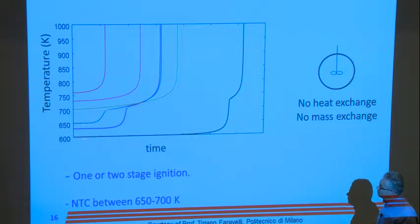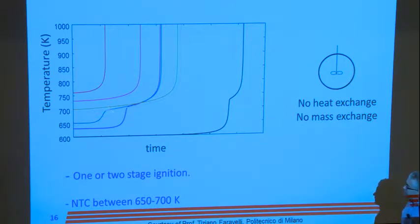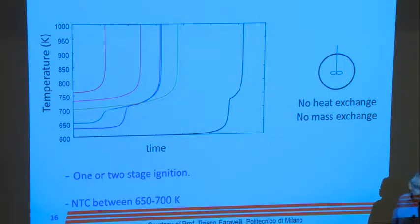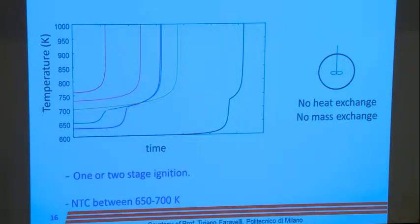Above 650–675 Kelvin, the step isn't as great, and it takes almost as long — or longer — to get to the second stage. The total ignition time is about the same at 650 Kelvin compared to 625. We have less buildup and less formation of keto hydroperoxide, so there are fewer released. We get less heat release in the first stage, meaning there's still more fuel to be consumed in the second stage — so it takes longer to get there. And above that, we don't really see the two-stage behavior.